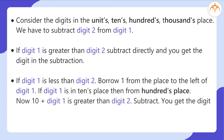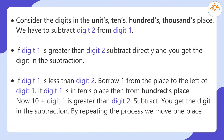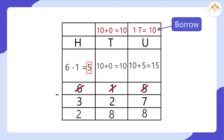Now 10 plus digit 1 is greater than digit 2 — subtract and you get the digit in the result. By repeating the process we move one place to the left. In the example above, in the hundreds place we subtract 3 from 5. Whereas in the units place, digit 1 (which is 5) is less than digit 2 (which is 7), so we borrowed 1 from the tens place and subtracted 7 from 15 to get 8.